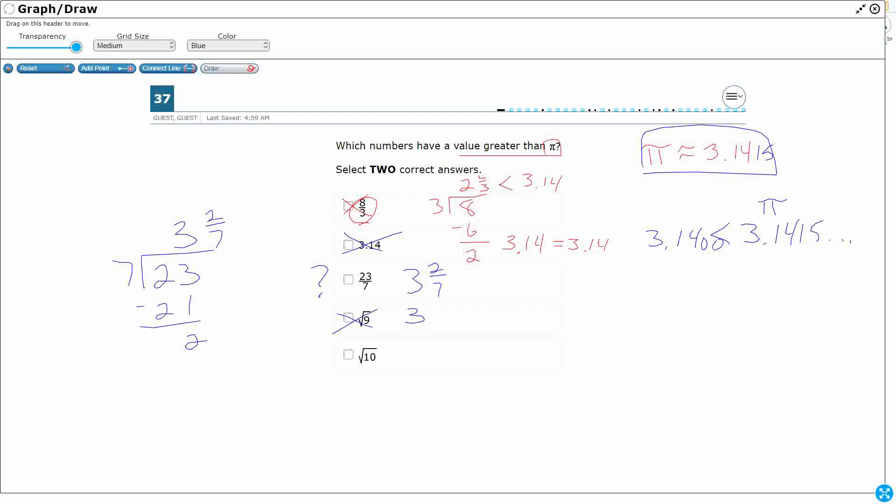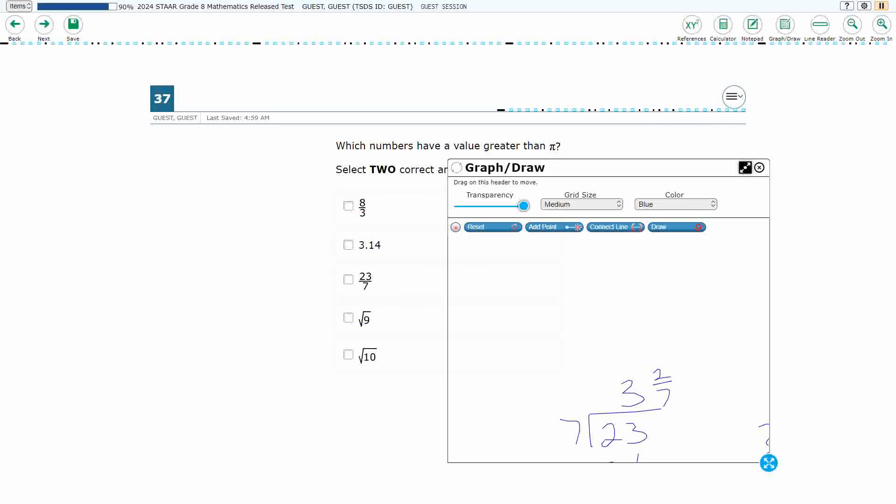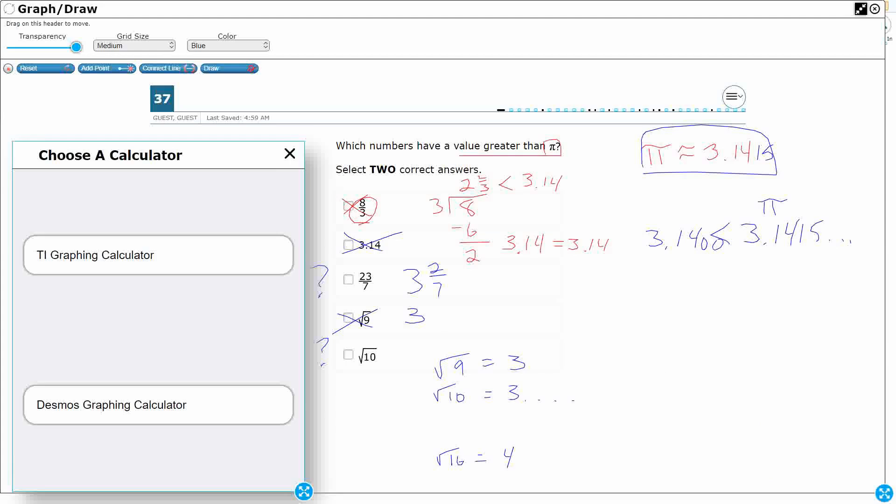So it should be 10. Well, if we know that the square root of 9 is 3, and then the next perfect square is 16, so square root of 10 is going to be 3 point something, a little bit above. But is it above the 3.14? So we've got two question marks. Well, we knew we were going to have to bring the calculator out anyways, so let's go ahead and just do that now.